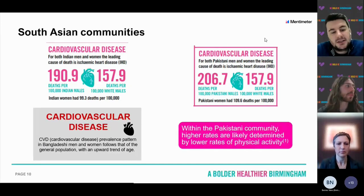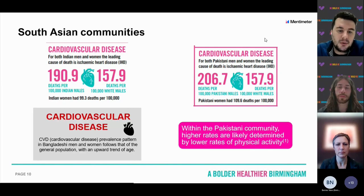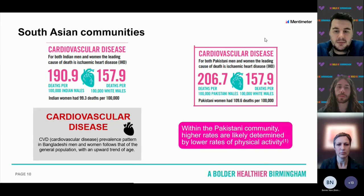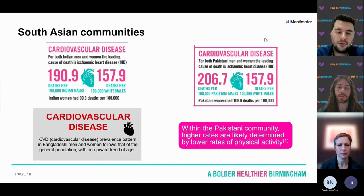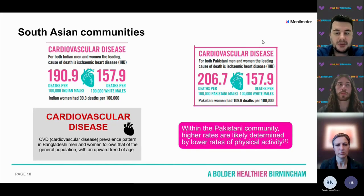Regarding South Asian communities, ONS data from 2012 to 2019 shows rates of cardiovascular disease as a cause of death. Indian males had 190.9 deaths per 100,000 compared to 157.9 for white males. That's even higher for Pakistani males at 206.7 deaths per 100,000. Pakistani women had 109.6 and Indian women 99.3 deaths per 100,000. Cardiovascular disease prevalence in Bangladeshi men and women follows the general population with an upward trend with age, while higher rates in the Pakistani community are likely determined by lower rates of physical activity.